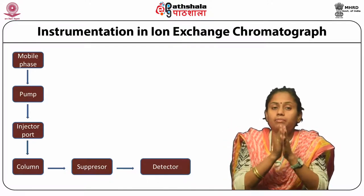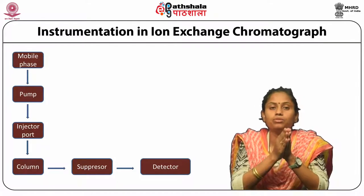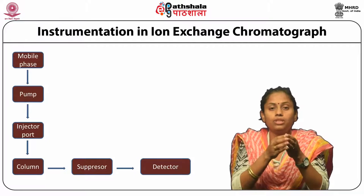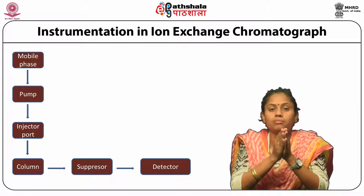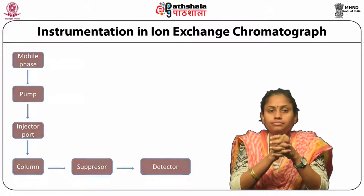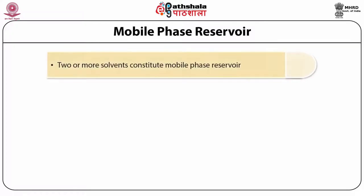The complete setup of Ion Exchange Chromatograph is managed by a computer-aided software which acquires and processes the data obtained during the complete chromatographic procedure. Now, let us talk about the different components used in Ion Exchange Chromatography. To begin with, the very first step is the selection of a mobile phase. In Ion Exchange Chromatography, there can be two solvents or more which are blended according to need to form the mobile phase reservoirs.